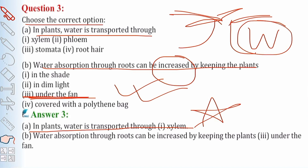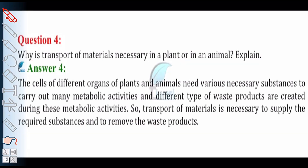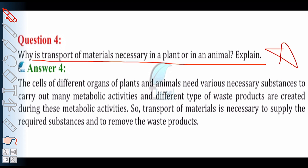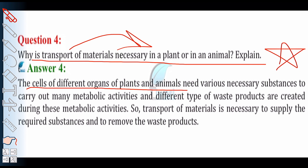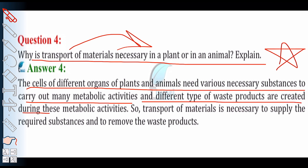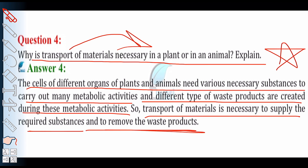Question number 4 — why is transport of materials necessary in a plant or in an animal? The cells of different organs of plants and animals need various necessary substances to carry out metabolic activities, and different types of waste products are created during these activities. So transport of materials is necessary to supply the required substances and to remove the waste products.